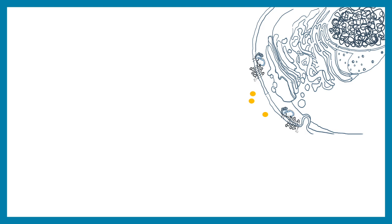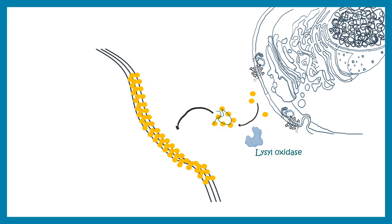The synthesis and secretion process: elastin is encoded by the gene in the nucleus, processed in the cytoplasm, then moved into the endoplasmic reticulum, and following the secretory pathway, tropoelastin is secreted outside the cell. Outside the cell, lysyl oxidase forms cross-links between these tropoelastins, and ultimately elastin uses a scaffold of fibrillin to grow into elastic fibers.